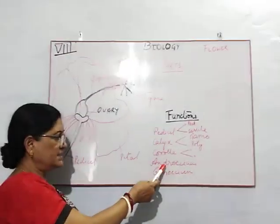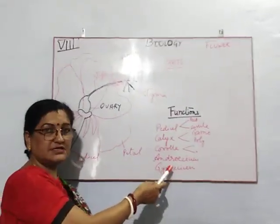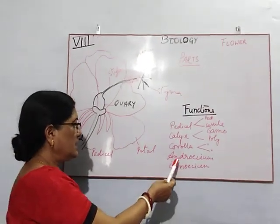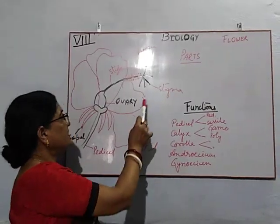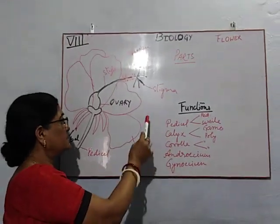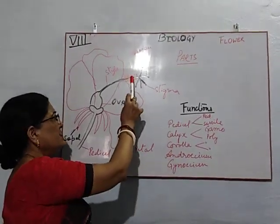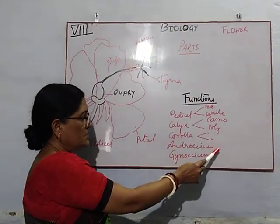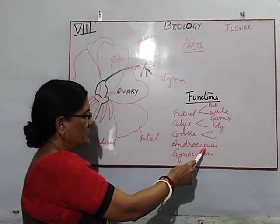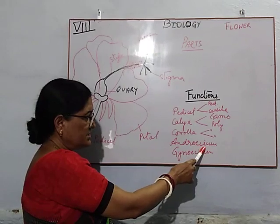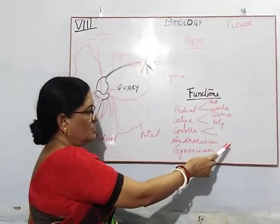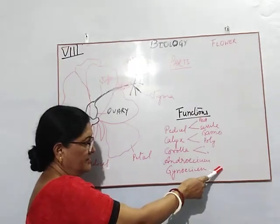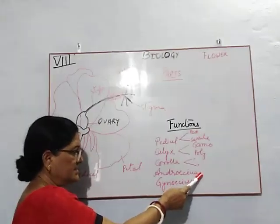As I told you, androecium is the male part of the flower. In an androecium, or in a stamen, there are three parts: the upper lobular structure, that is the anther; the lower tubular structure, which is the filament; and in between there is the connective.